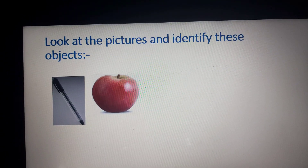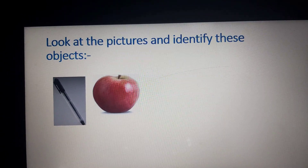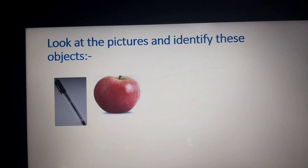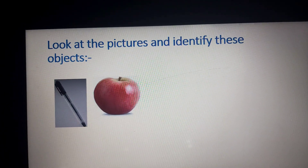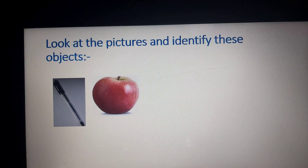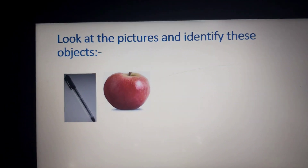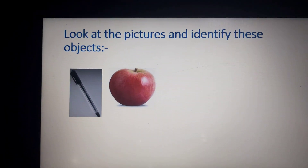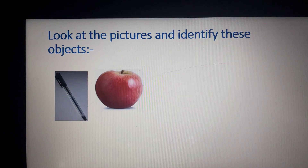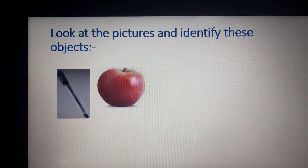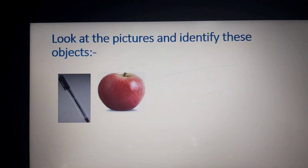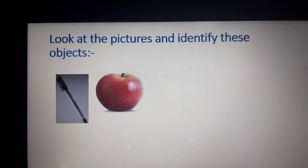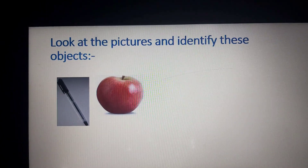What is this? Apple. Who likes an apple? All like apples. Very good. Now tell me, what is the color of the apple? Red. Right. Now tell me the size or shape of the apple. It is round. Good.